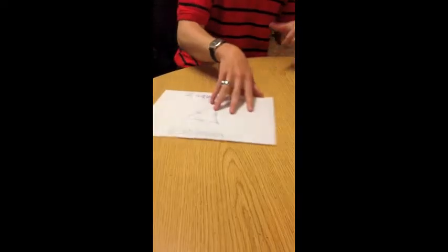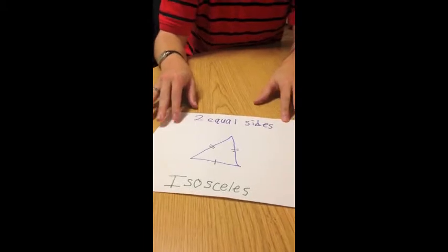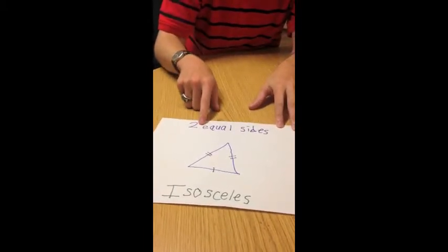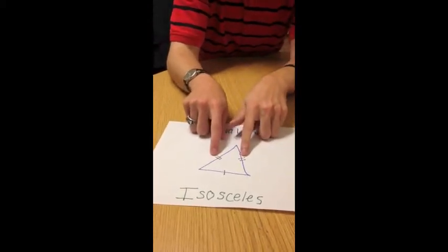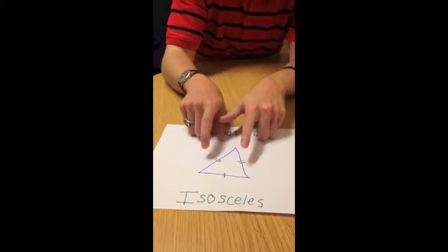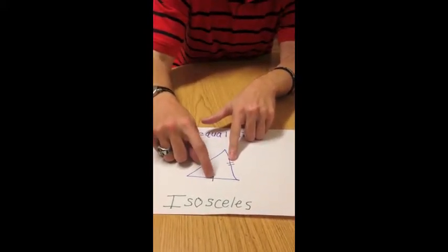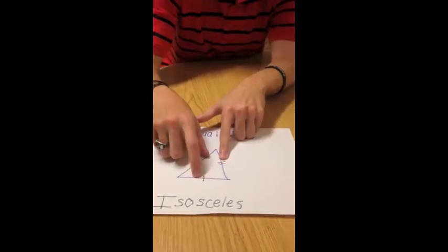The first type of triangle is the isosceles triangle. The isosceles triangle has two equal sides, as designated by these marks. These marks represent that the sides are equal, and then the one line at the bottom means that it is a different, equal angle.